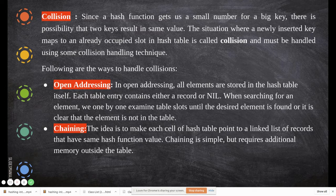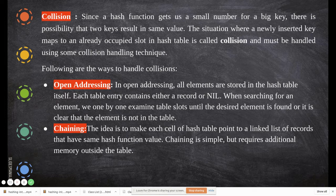For example, for an array of size 10 (indices 0 to 9), storing 78: 78 mod 10 = 8, so 78 is stored at location 8. Now when 98 comes, 98 mod 10 = 8 again, but location 8 is already occupied. The situation where a newly inserted key maps to an already occupied slot in the hash table is called collision.